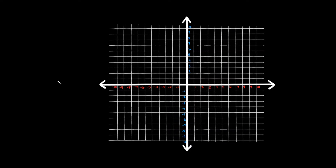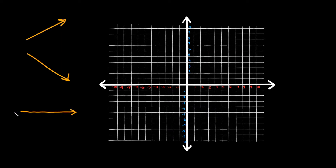In this video I'm going to teach you how to find the slope of a line. There are basically four main slopes that a line can have: the first is a positive slope, the second is a negative slope, and then two more special cases — a horizontal or flat slope, and a vertical slope.